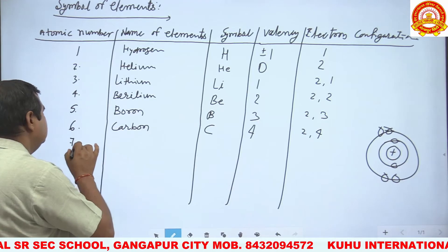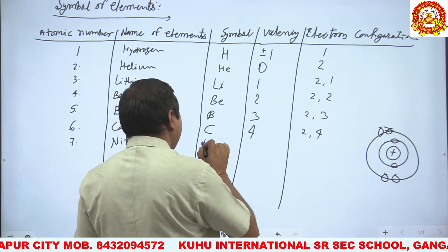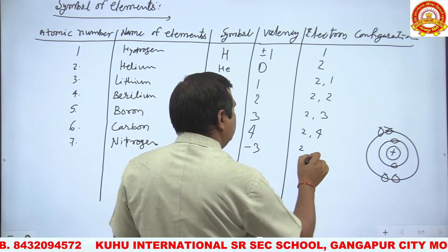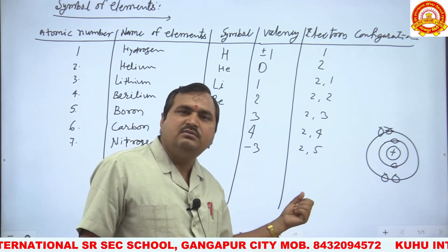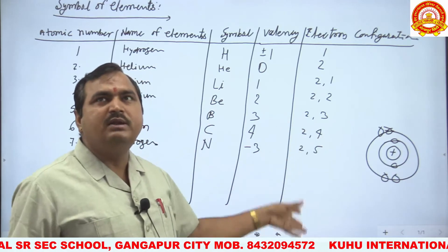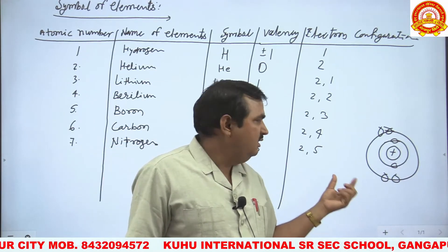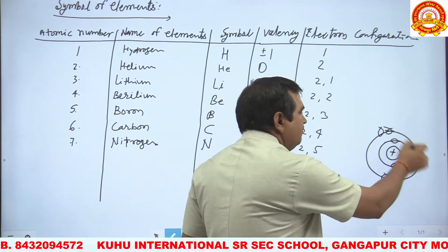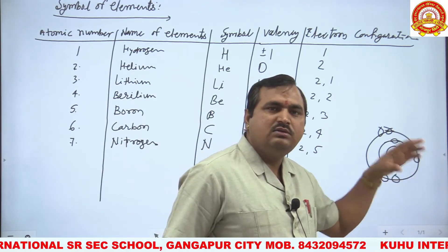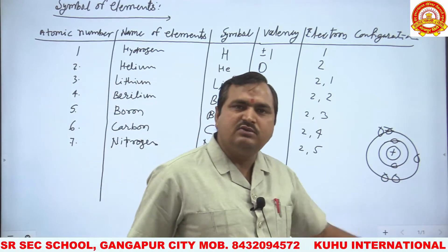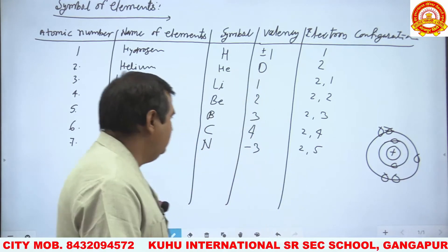Number 7: Nitrogen, symbol N, valency −3, electron configuration 2, 5. Why is the valency −3? Because the outermost shell has 5 electrons, and to complete the octet (8 electrons needed), it lacks 3 electrons. So nitrogen gains 3 electrons, completing its octet — hence valency −3.